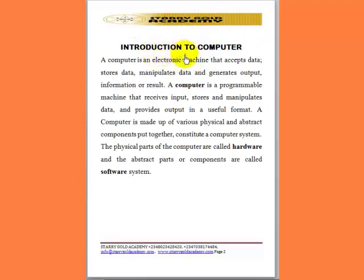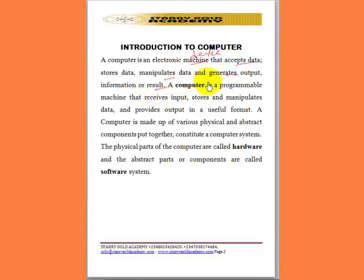Introduction to Computer. A computer is an electronic machine or device that accepts data, stores data, manipulates data, and generates output information or results. So a computer is a programmable machine that receives input, stores and manipulates data, and provides output in a useful format.